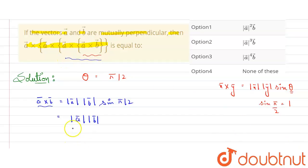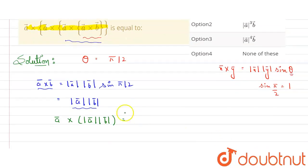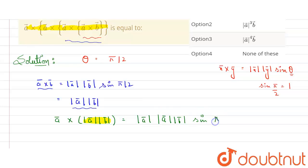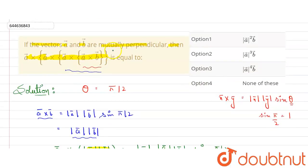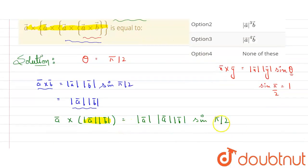Now let's cross this result with vector a. We write a cross (magnitude of a times magnitude of b). The magnitude of the first vector times the magnitude of the second vector, with sine theta where theta is 90 degrees — since all vectors are mutually perpendicular — gives sine 90 equals 1. So this equals magnitude of a squared times magnitude of b.